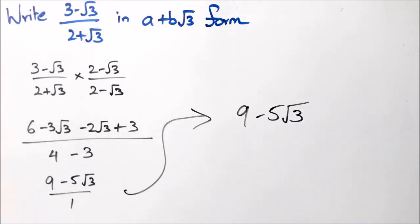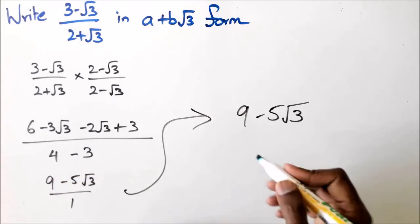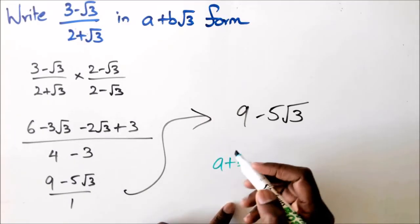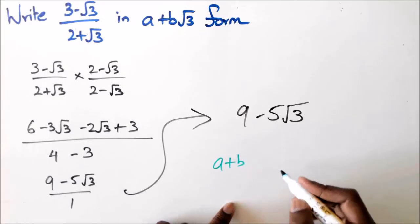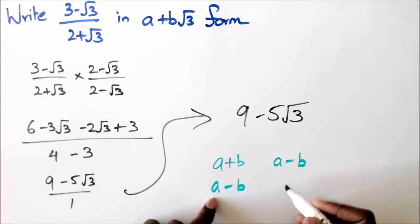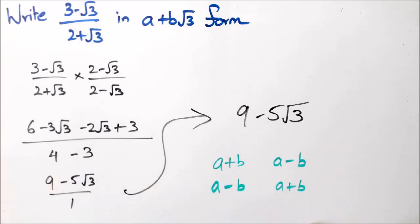Regarding the minus sign in the middle — it'll always be minus because when you multiply a conjugate pair, whether you start with a plus b or a minus b, the product a² minus b² always has a minus in the middle. So yes, the middle term will always be minus.